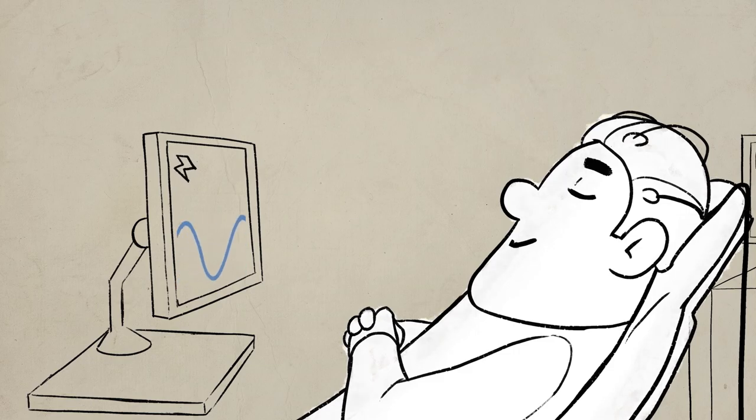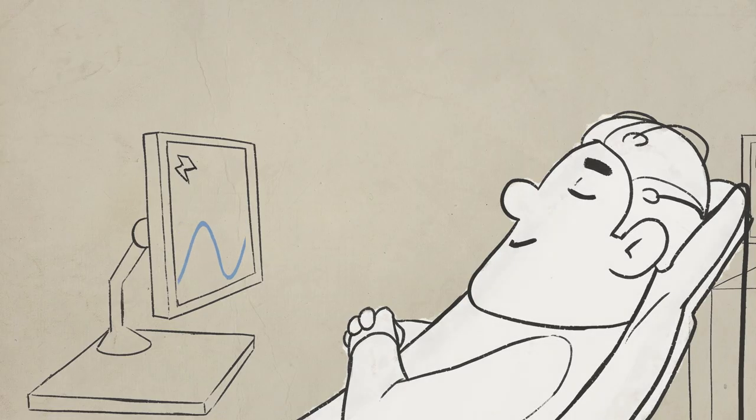For example, when relaxed with closed eyes, the dominant frequency of the signals emitted by the brain is generally between 8 and 13 Hz.